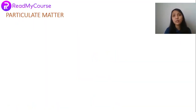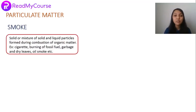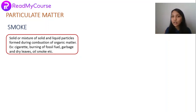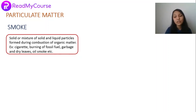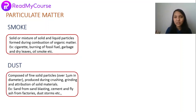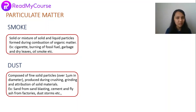Now we discuss particulate pollutants. Smoke is basically solid or a mixture of solid and liquid particles, formed during combustion of organic matter — for example, cigarette smoke, burning of fossil fuels, garbage, and dry leaves. Dust is composed of fine solid particles, approximately one micrometer in diameter, produced during crushing, grinding, or attrition of solid materials — for example, sand from sandblasting, cement dust, fly ash from factories, and dust storms.